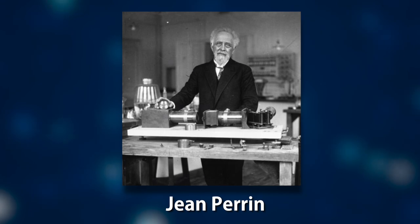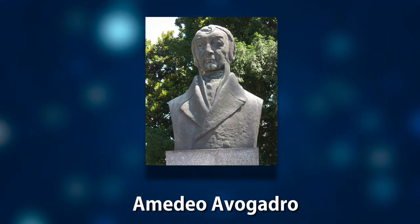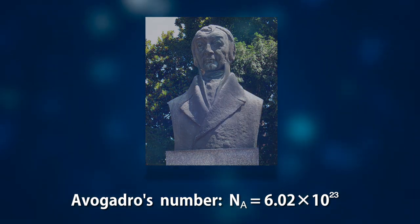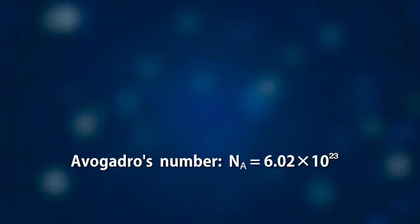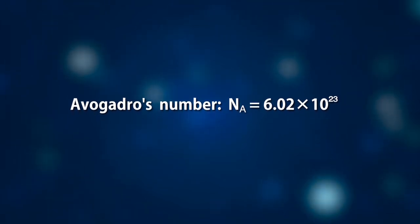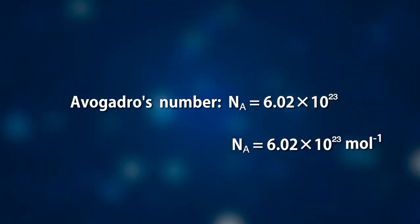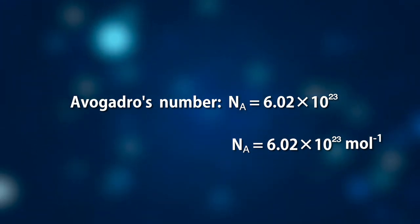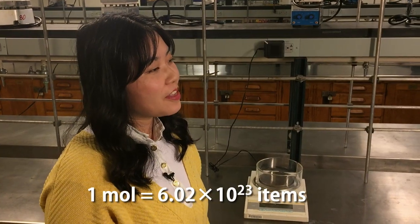The French physicist Jean Perrin proposed naming the constant in honor of Avogadro, but Dr. Avogadro himself during his life never saw this number that is now named after him. Avogadro's number Nₐ is equal to 6.02 times 10 to the 23rd. Like any pure number, it is dimensionless, meaning there is no unit attached to it. However, it also defines the mole, so we can express Nₐ as 6.02 times 10 to the 23rd per mole. In this form it is properly known as Avogadro's constant.